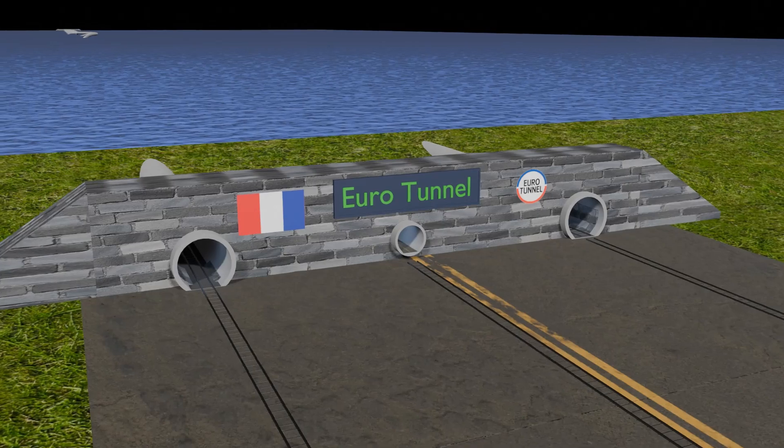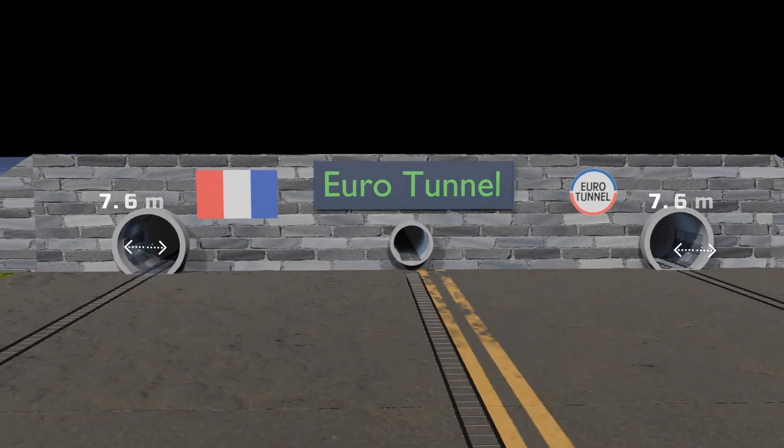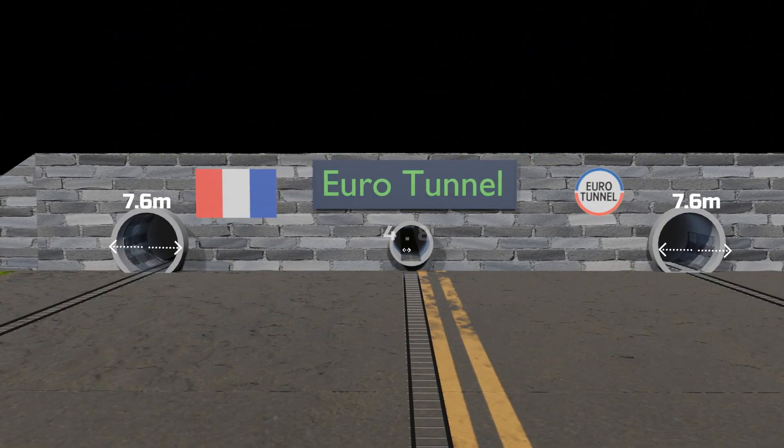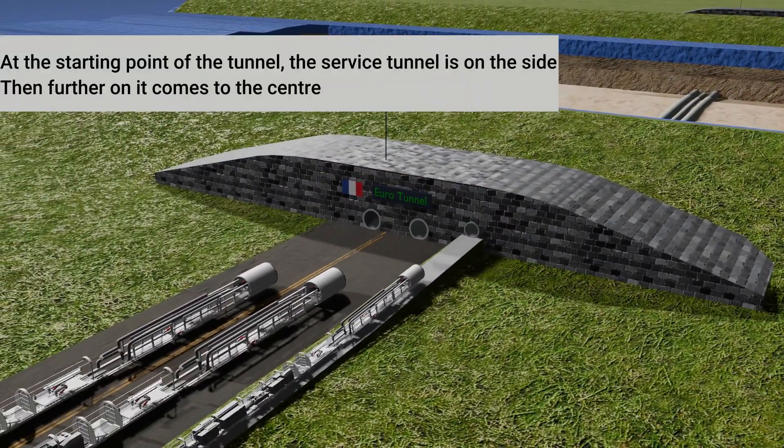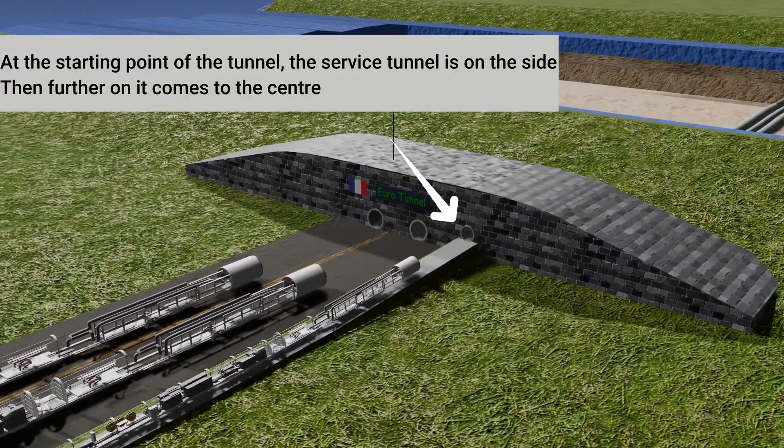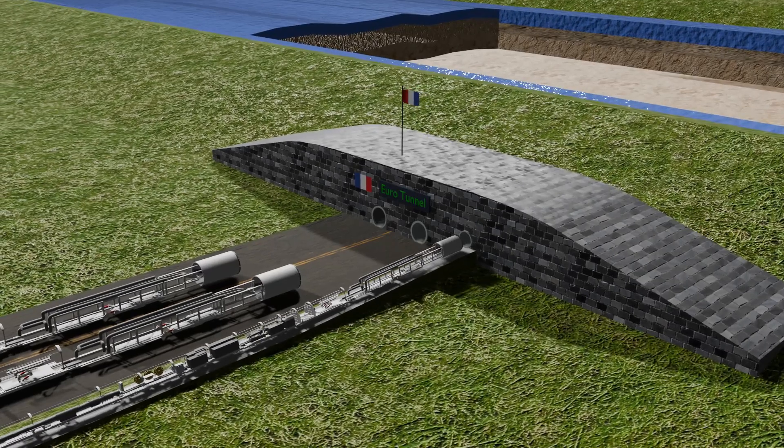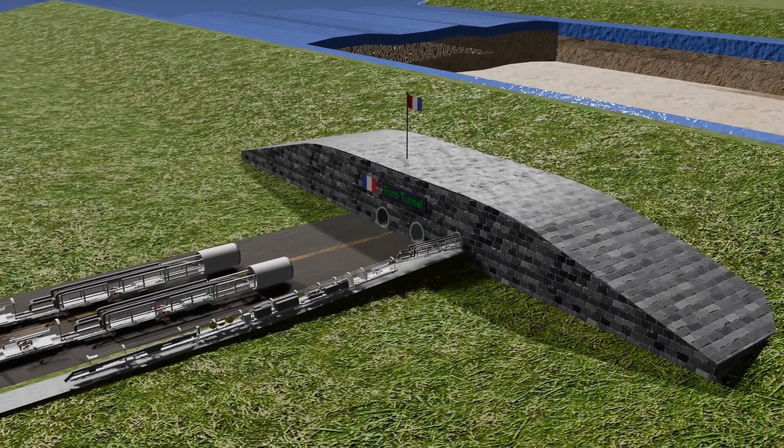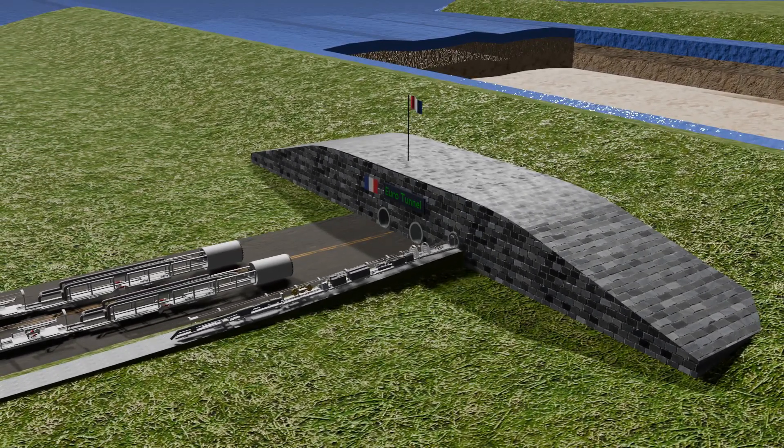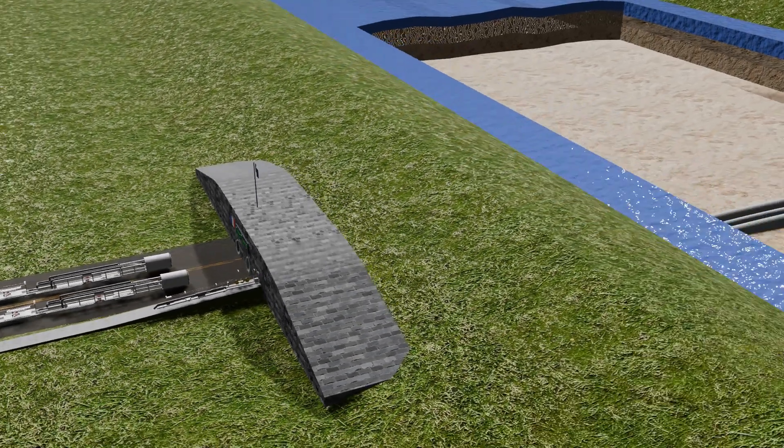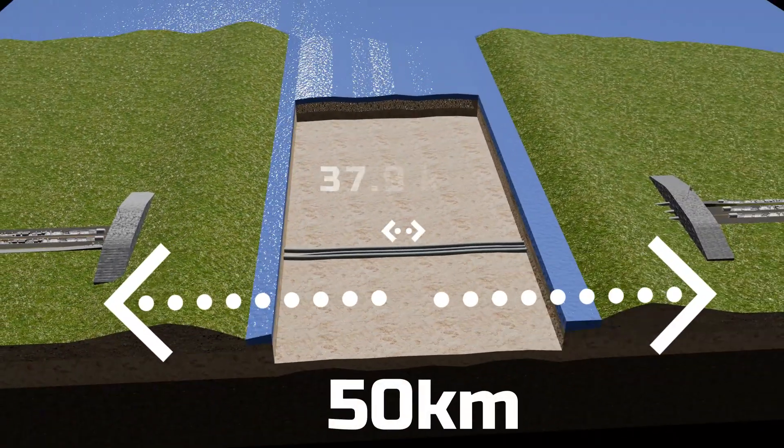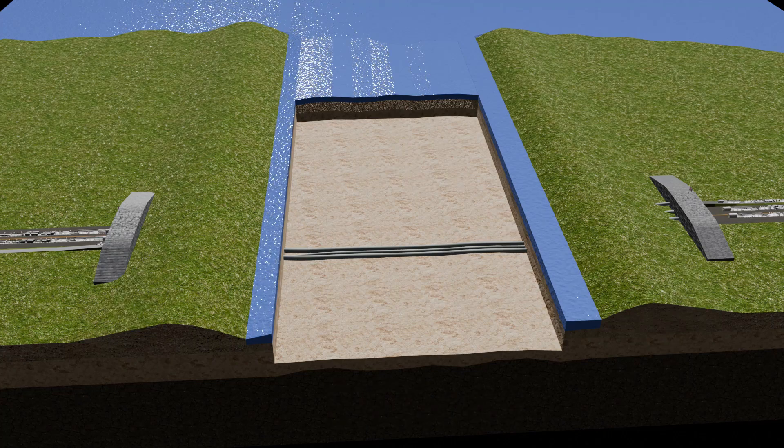The diameter of each railway tunnel was 7.6 meters, while the service tunnel in the center measured 4.8 meters in diameter. Construction began with the service tunnel, which was placed slightly ahead of the railway tunnels. This allowed geological investigations to be conducted for the two main railway tunnels alongside the service tunnel. The total length of the tunnel is 50 kilometers, with 38 kilometers running beneath the seabed.